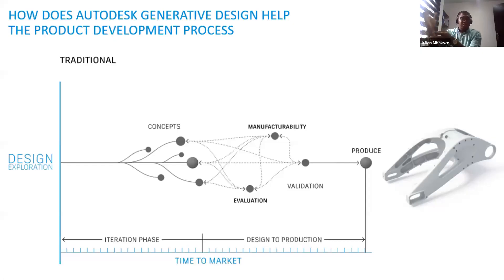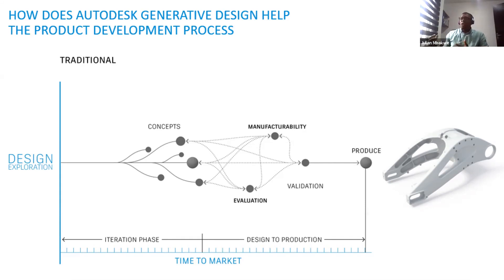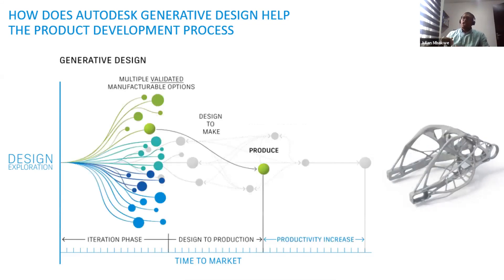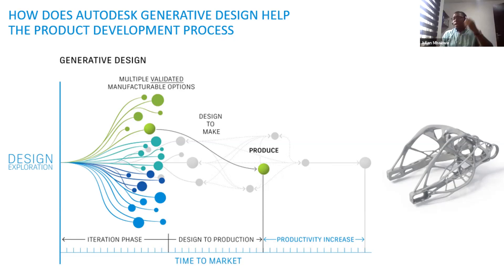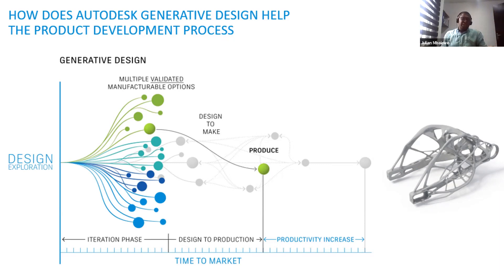With generative design you have the ability to generate thousands of outcomes based on engineering analysis, with FEA embedded in the process and manufacturing considerations included. On the traditional process you are limited to a small number of options. With generative design, you define parameters and boundary conditions — like in FEA — and generate numerous options, then narrow down and converge to a single choice. This is faster than the typical traditional process.